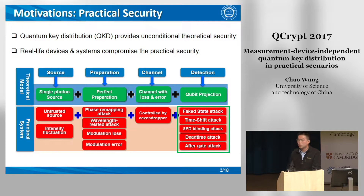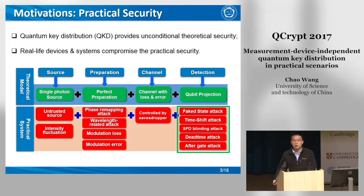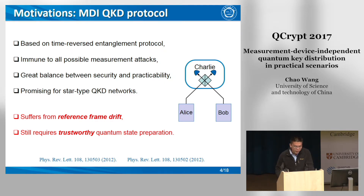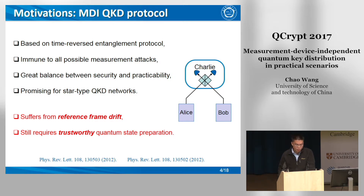To close these loopholes, we can either deploy specific defensive systems to remove the corresponding security threats, or we can use the violation of Bell inequality to construct a full device-independent protocol, but these are either not capable against some unknown attacks or not practical at present. Another approach is MDI-QKD. Based on the time-reverse entanglement protocol, MDI-QKD treats the measurement side as a black box and doesn't care about the details of the measurement process. The measurement devices can be even offered and totally controlled by the eavesdropper. Therefore, it is intrinsically immune to all possible detection attacks.